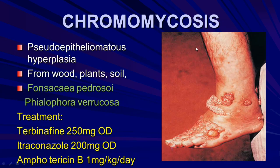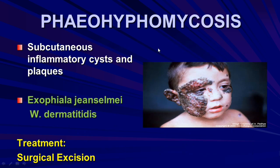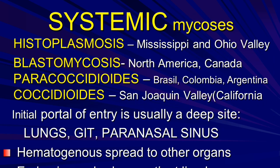Chromomycosis: the organisms are Fonsecaea pedrosoi and Phialophora verrucosa. Remember the cauliflower-like chain skin appearance at exposed sites. Lobomycosis and paracoccidioidomycosis are subcutaneous inflammatory infections. Rhinosporidiosis is caused by Rhinosporidium seeberi organism.